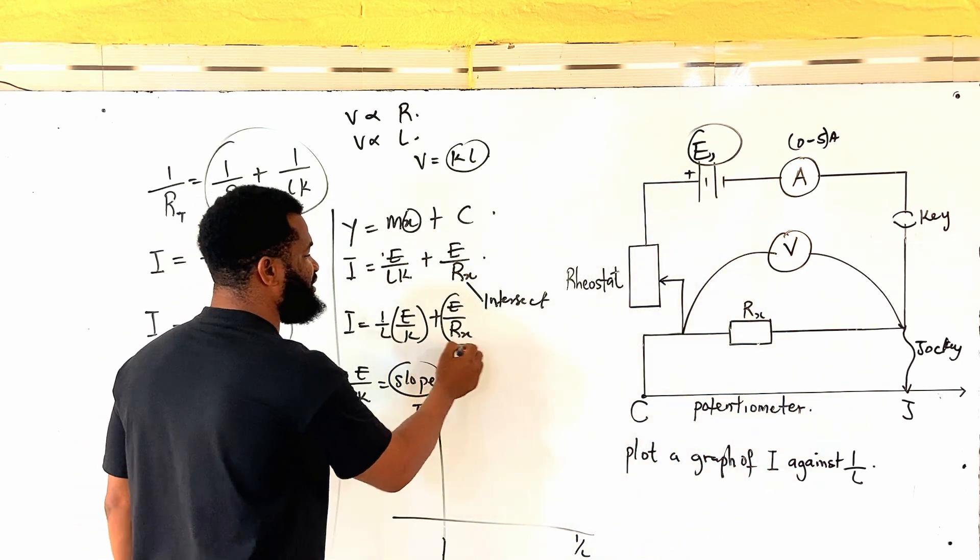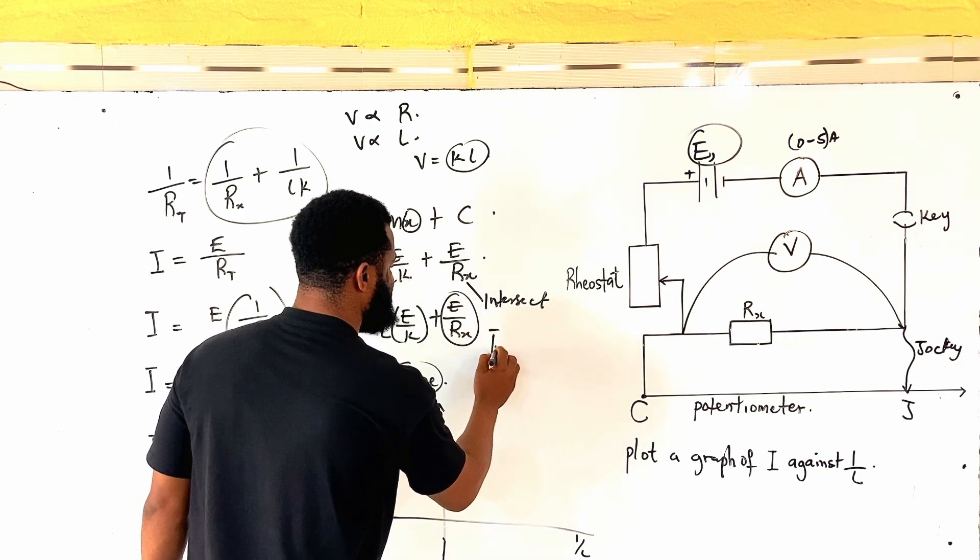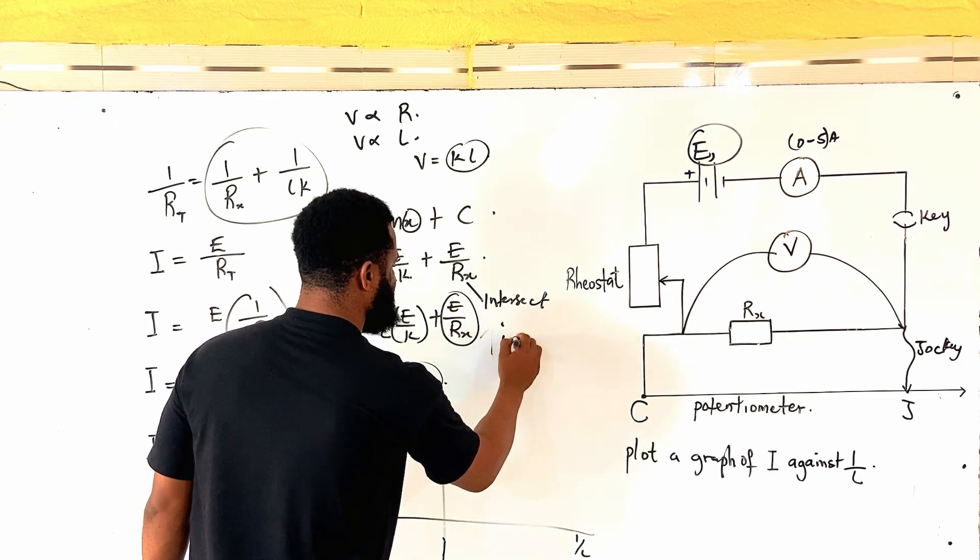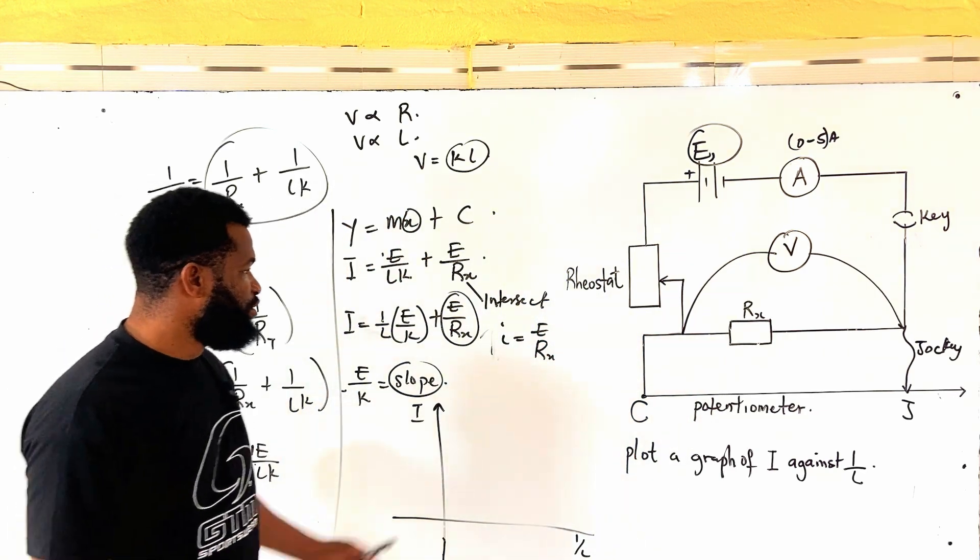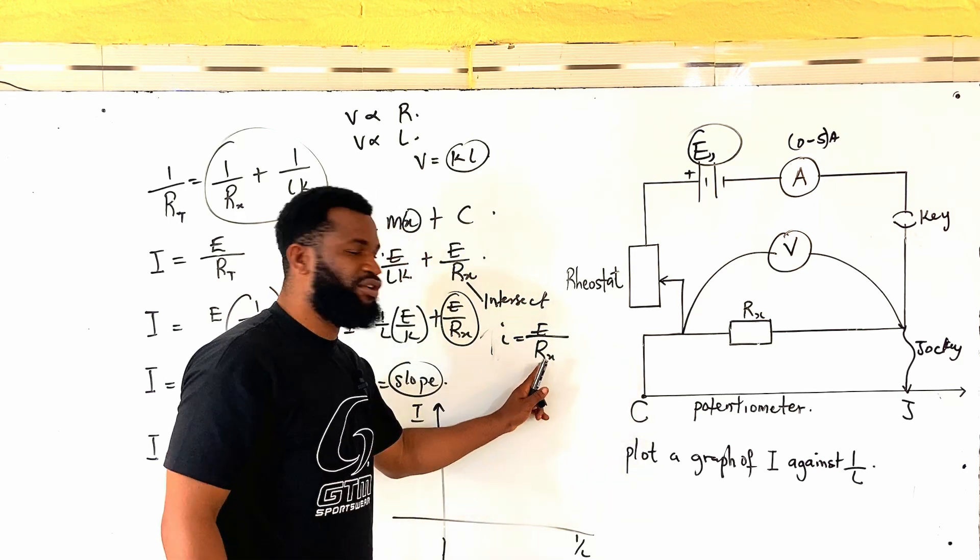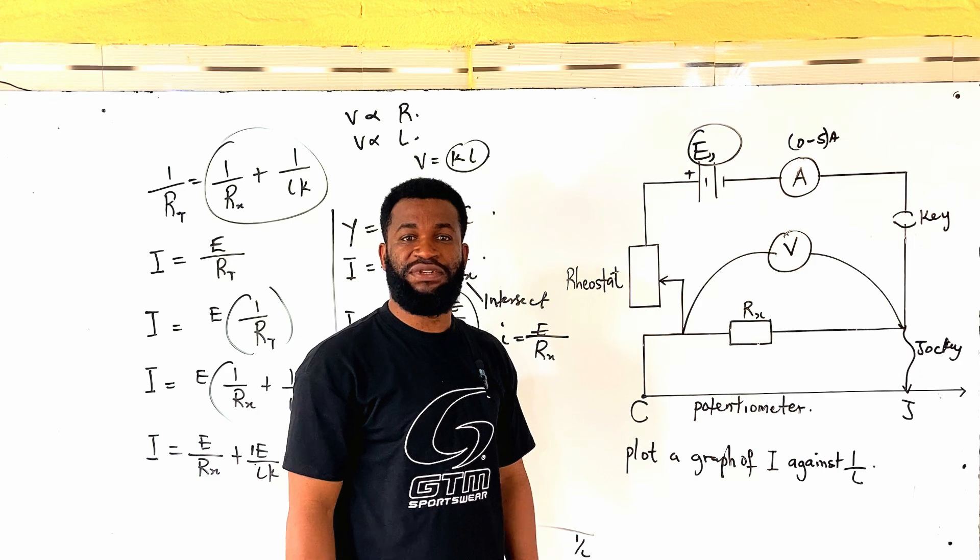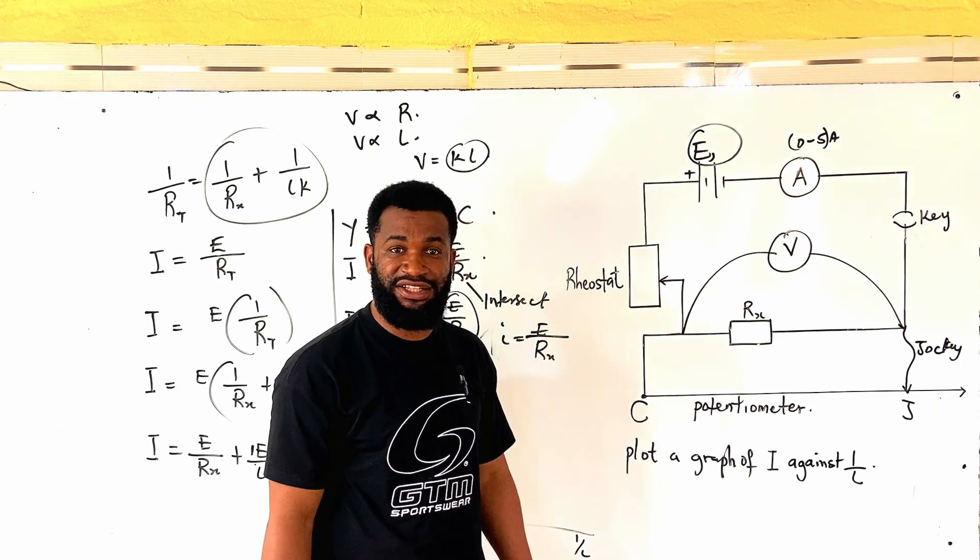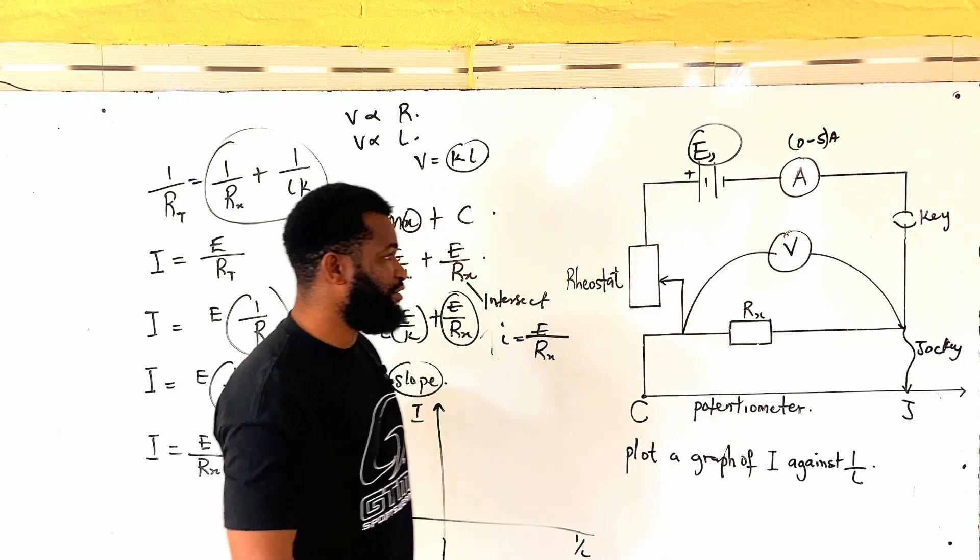At the same time, if you are asked to find the intercept, the intercept is going to be this. So, we have that intercept I, I for intercept, let me say I for intercept is equal to E all over R sub X. So, with this, you can be able to find the value of the resistor you use in your experiment. So, physics teachers and other students who are interested in learning, tell me what you have on the comment section. Let's see how it goes.